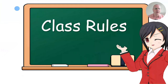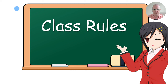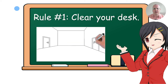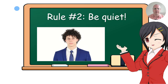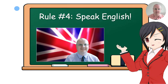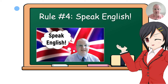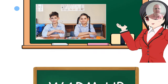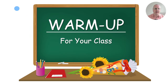Then we go through class rules. Class rules are important because they set the mood and students know what is expected from them. Rule number one: clear your desk. Rule number two: be quiet. Rule number three: listen to teacher Val. Rule number four: speak English. And rule number five: raise your hand. Five rules.